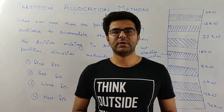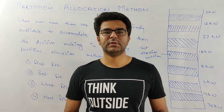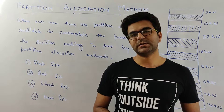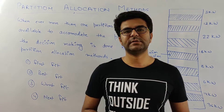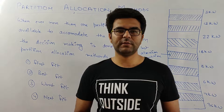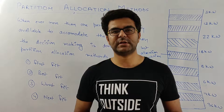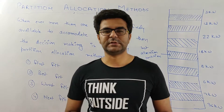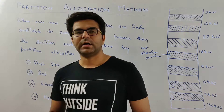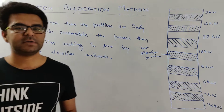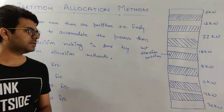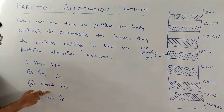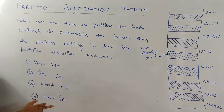Let's consider the next topic in memory management: partition allocation method. Partition allocation method is needed whenever there are more than one free blocks available for allocation of any process. There are four partition allocation methods: first fit, best fit, worst fit, and next fit.